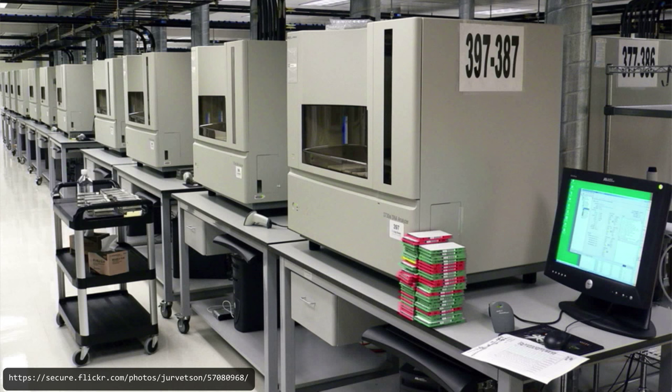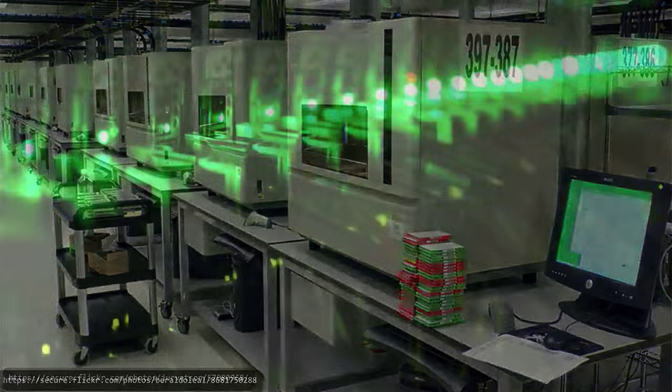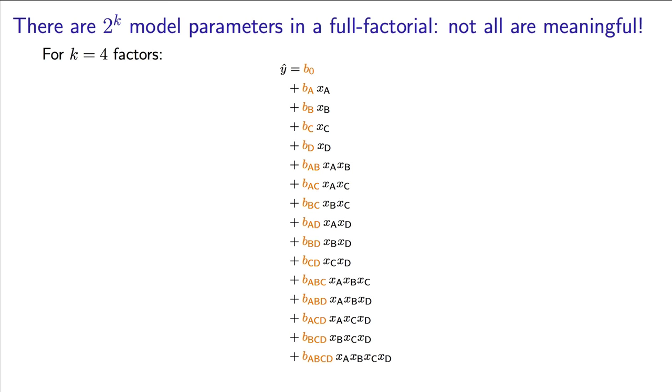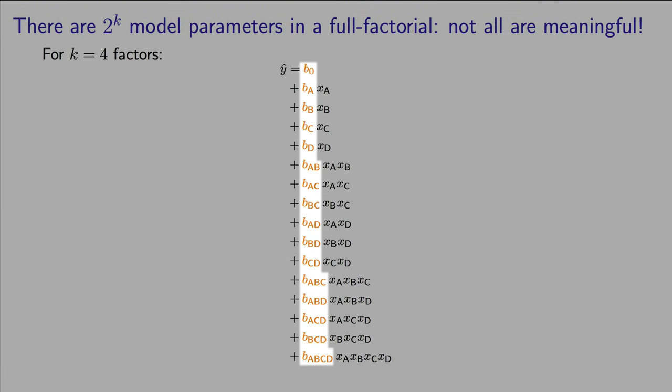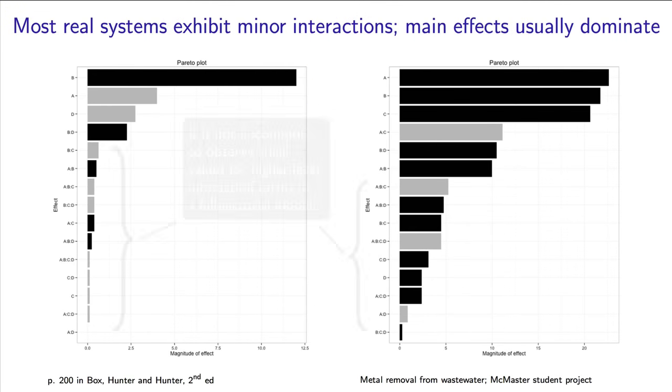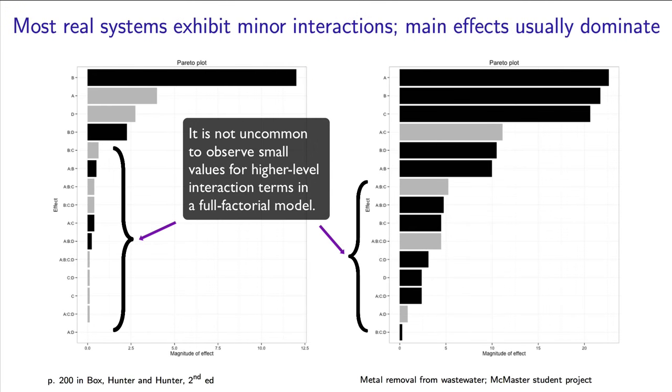This is even true for systems that can be highly automated, for example, systems with DNA sequencing, or systems that are done using computer software and simulation. There is also very little use in estimating all 2 to the power of k coefficients. These higher order interactions are non-existent, and many of those coefficients will be so small that they are practically zero. You will seldom see a three factor interaction that is actually present in a real system. And a fourth order and higher level interactions almost certainly don't exist in practice.